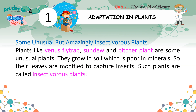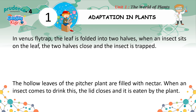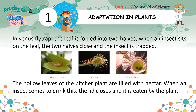Some unusual but amazing insectivorous plants: Plants like Venus flytrap, sundew, and pitcher plant are unusual plants. They grow in soil which is poor in minerals, so their leaves are modified to capture insects — such plants are called insectivorous plants. In Venus flytrap, the leaf is folded into two halves; when an insect sits on the leaf, the two halves close and the insect is trapped. The hollow leaves of the pitcher plant are filled with nectar; when an insect comes to drink, the lid closes and it is eaten by the plant.